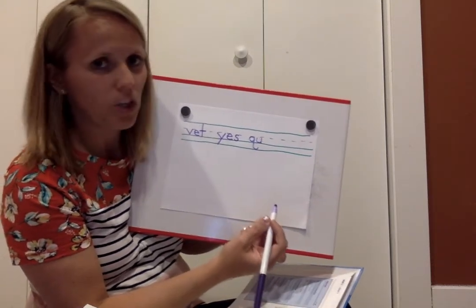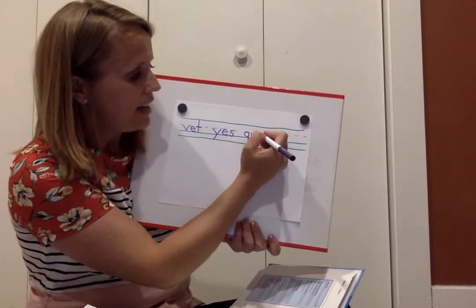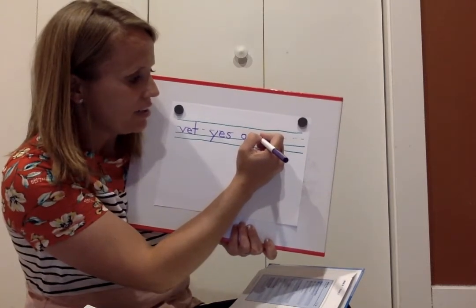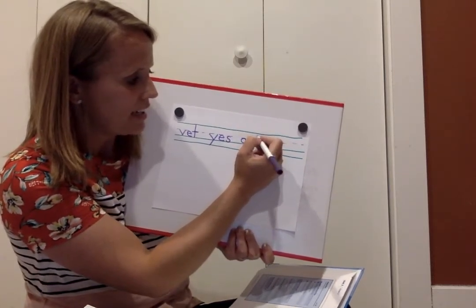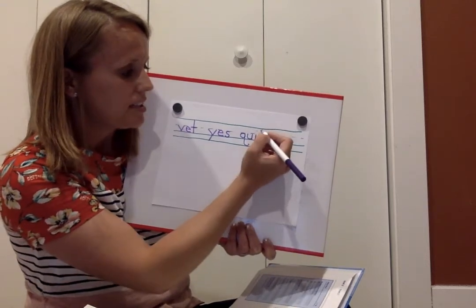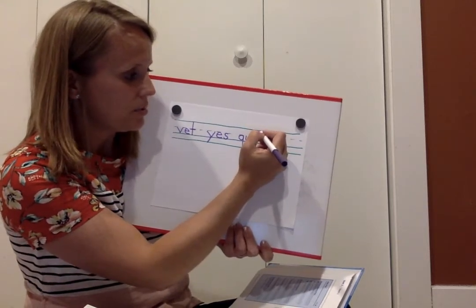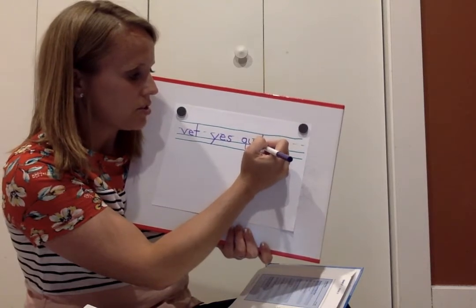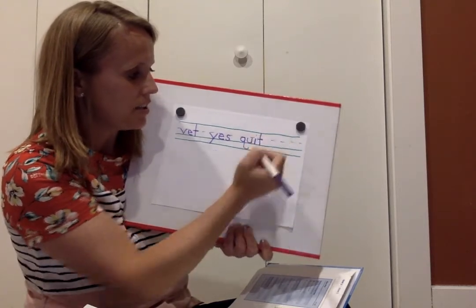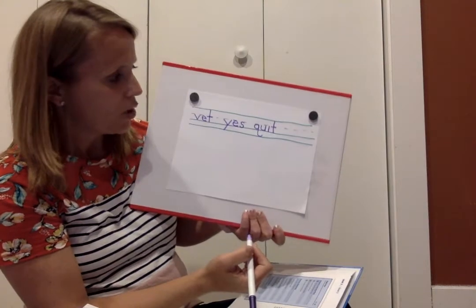Now I, we're spelling quit. I start on the plain line, go down to the grass line, add a dot. T, start on the skyline, go down to the grass line, cross it on the plain line. Quit.